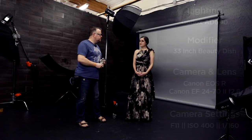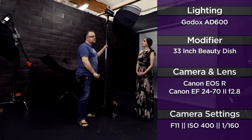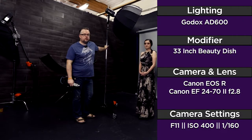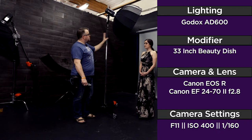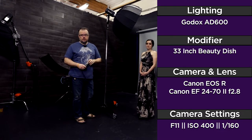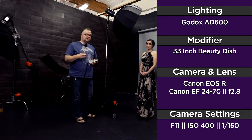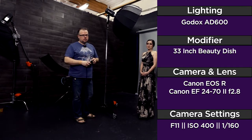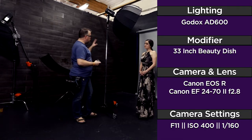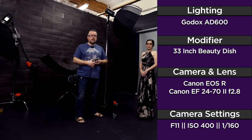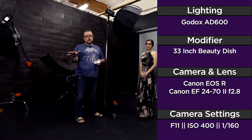Today we're going to be using a Godox AD600 strobe and a 33-inch beauty dish from Strobe Pro. Later we'll be using a second Godox AD600 strobe for the second lighting pattern we'll talk about today. There will be links in the description below for all the gear I'm using — these are not affiliate links.